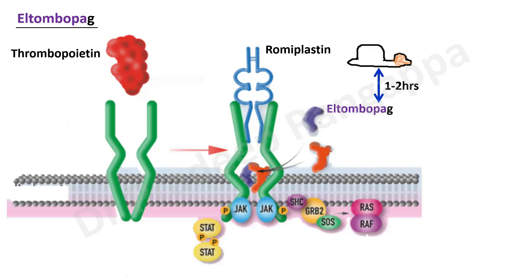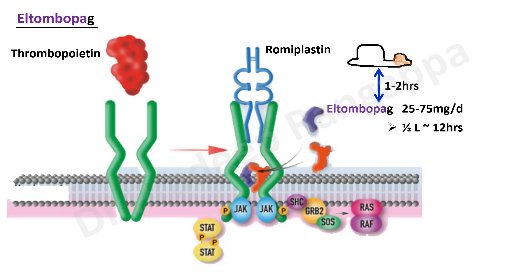The key thing about eltrombopag is it needs to be taken one to two hours after food. This is because eltrombopag chelates the cations present in food, depleting it of nutrients — specifically calcium, magnesium, zinc, and selenium. The dosage of eltrombopag is 25 to 75 milligrams per day. Its half-life is around 12 hours, and it must be taken two hours after food because of its chelating effect.